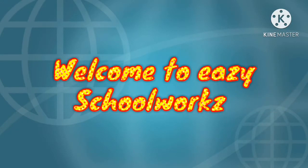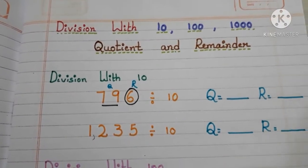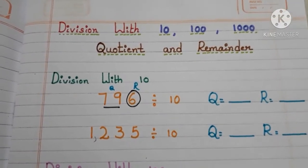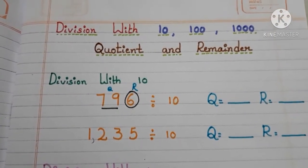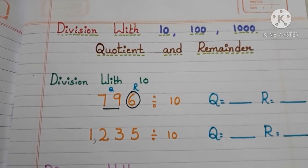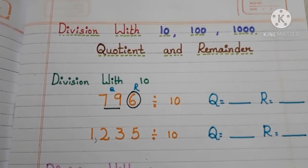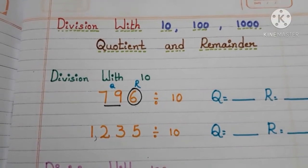Hi all, welcome back to Easy School Works. In this video we are going to learn what is the quotient and remainder when we divide a number with 10, 100, and 1000. So let's get started.